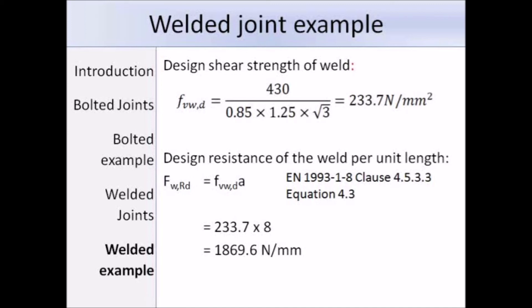Substituting all values into expression 4.4 gives a design shear strength of the weld of 233.7 N/mm². Using equation 4.3, the design resistance of the weld per unit length equals 233.7 N/mm² multiplied by the throat thickness of 8 mm, giving 1869.6 N/mm.